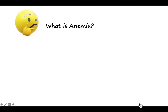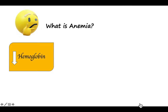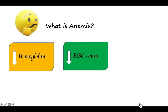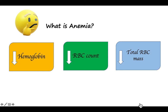The simplest of all questions: what is anemia? Anemia is not simply the absence of blood. Anemia may be defined as reduced hemoglobin — less than 12 grams per deciliter — or reduced RBC count less than 4 million per microliter, or a reduction in the total RBC mass. From a physiological point of view, it is a reduction in the oxygen-carrying capacity of the blood.